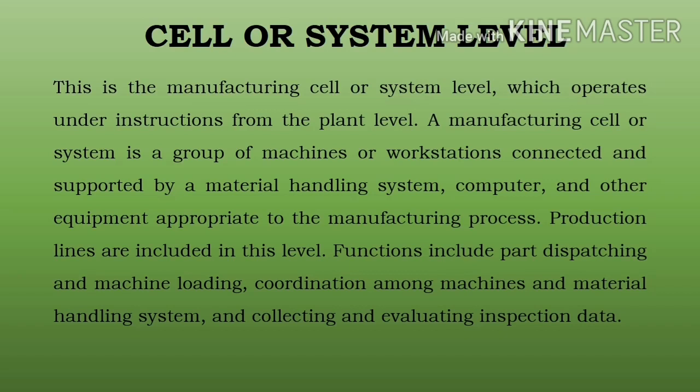Next level: cell or system level. This is the manufacturing cell or system level which operates under instruction from the plant level. A manufacturing cell or system is a group of machines or workstations connected and supported by a material handling system, computer, and other equipment appropriate to the manufacturing process. Production lines are included in this level.